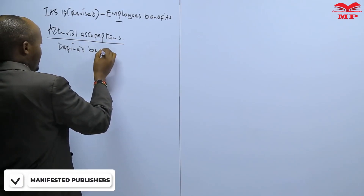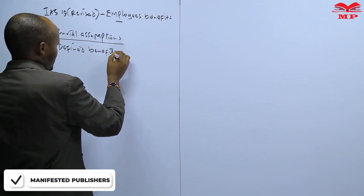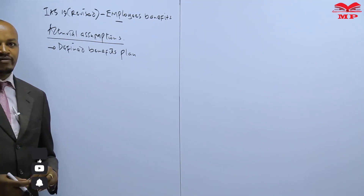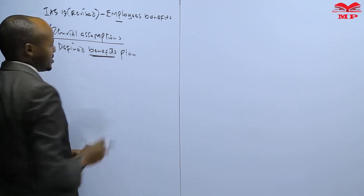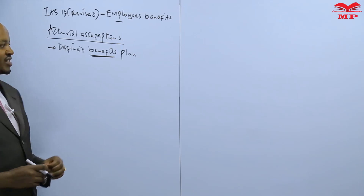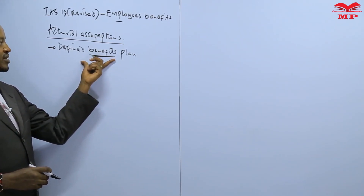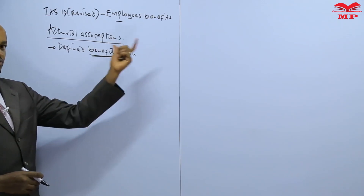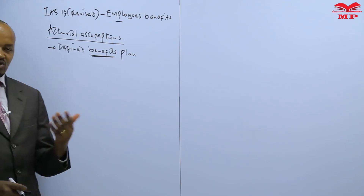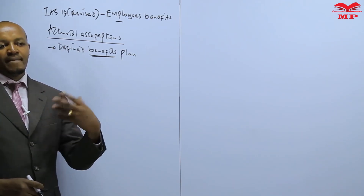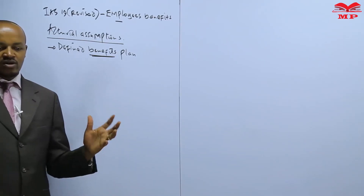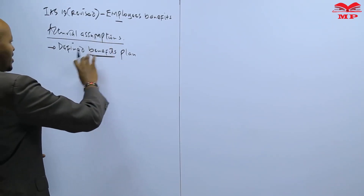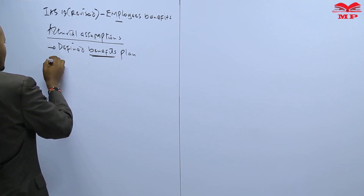Under the defined benefit plan, the employer needs to make some assumptions — estimates about the future — which will enable the employer to determine the benefit payable to employees on retirement. The benefits payable to employees under this type of post-employment benefit plan are defined and known in advance, and therefore the employer needs to make those assumptions to determine both the benefits and the contributions he needs to make, maybe monthly or annually.